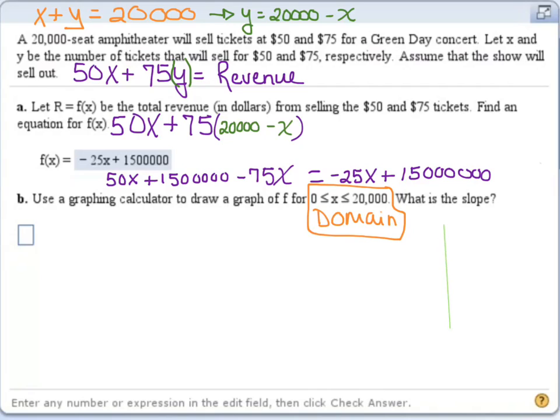So if I did my graph here, I went ahead and drew a line. It would be starting up here at 1,500,000 and going down.